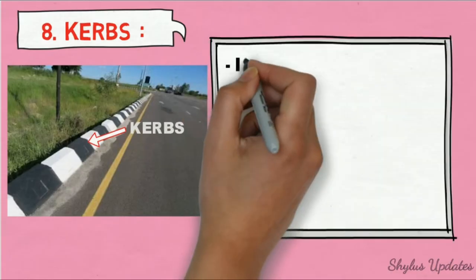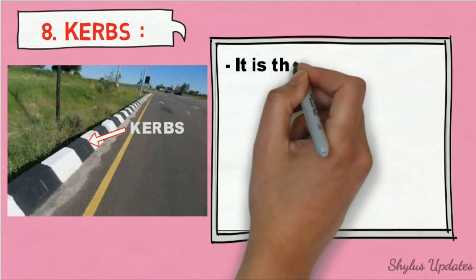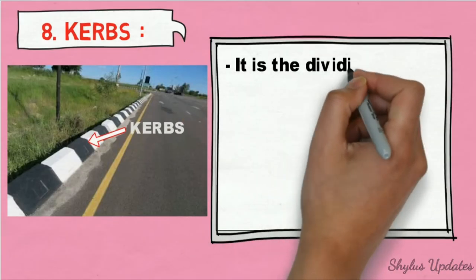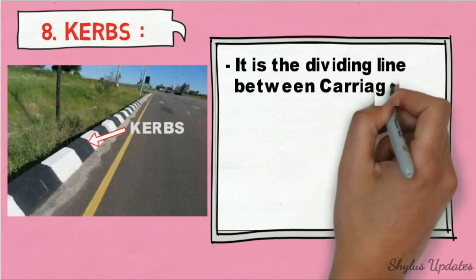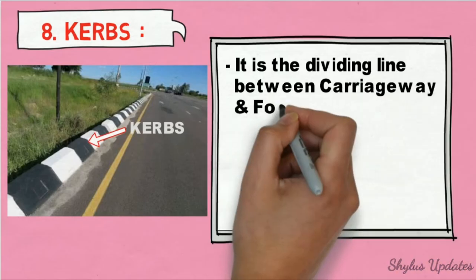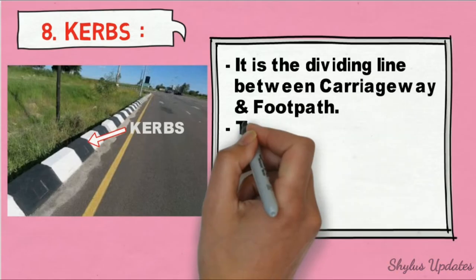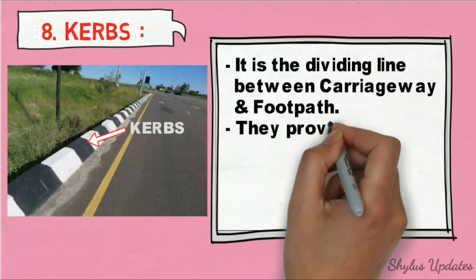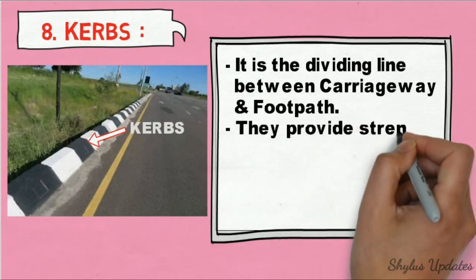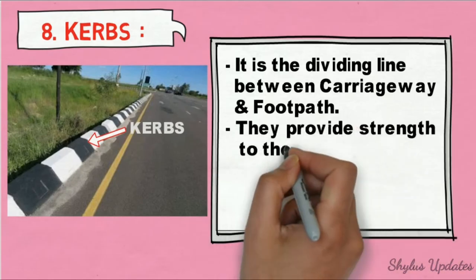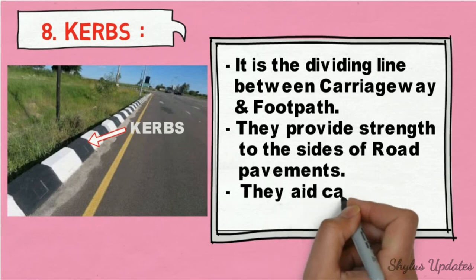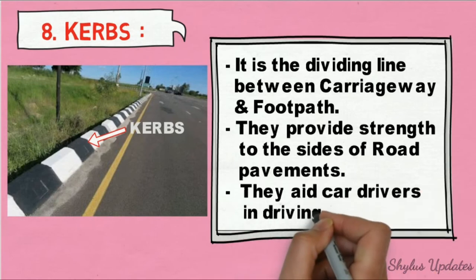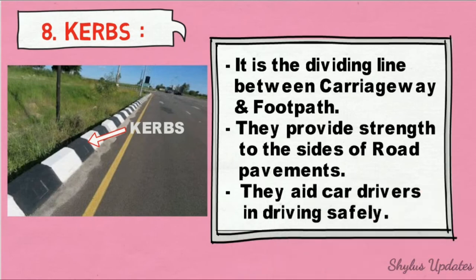Curbs. It is the dividing line between carriageway and footpath. They provide strength to the sides of road pavements and aid car drivers in driving safely.